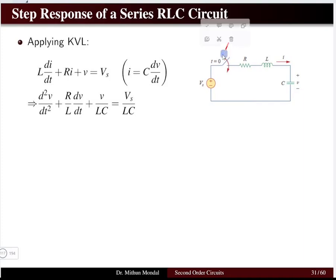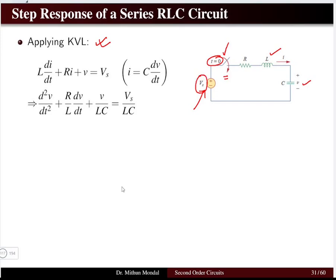If you have a series RLC circuit controlled with a switch and a DC voltage Vs is applied, we can apply the KVL equation. Suppose the switch is closed at time t equal to zero. Before the switch is closed, the system is under natural response with initial capacitor voltage and inductor current. When the switch is closed, the DC source — acting as a step source — comes into picture, giving the step response.